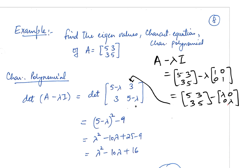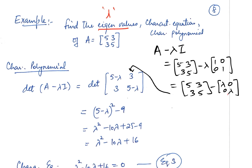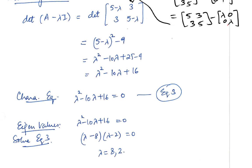For a 2x2 matrix, you multiply the diagonal elements: (5 minus lambda)(5 minus lambda) squared, minus the off-diagonal product 9. When you expand, you see it's a polynomial — a quadratic polynomial in lambda. This is the characteristic polynomial. To find eigenvalues, we set this determinant to zero — that gives us the characteristic equation. Solving it, we get the two eigenvalues: lambda equals 8 and lambda equals 2.